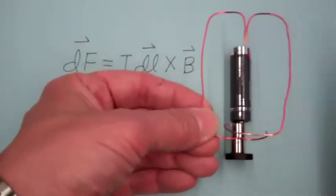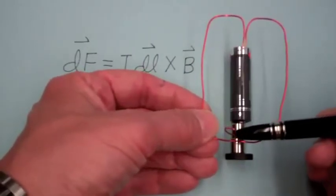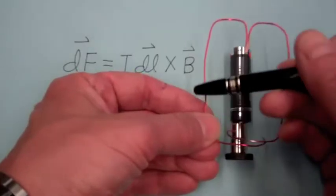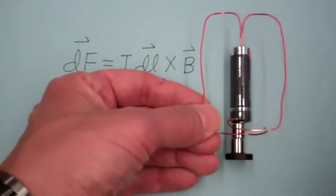Okay, so the current is going to flow out of the battery into the magnet and up through both ends of this wire, and then back into the negative terminal of the battery.